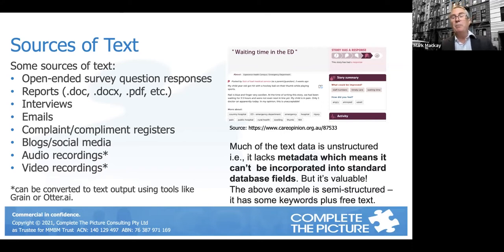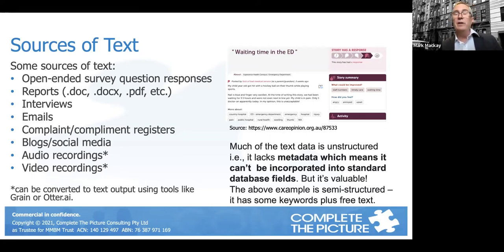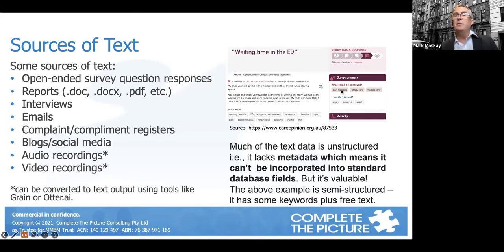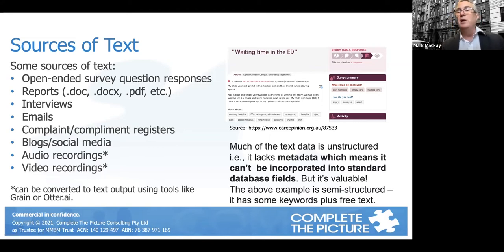We can take the structured pieces and put them into a database. Up here we see Care Opinion, which is a website where people provide feedback to hospitals or aged care. Some governments around Australia are using this to get patient feedback, and it's open for anyone to comment on. The unstructured part is where someone wrote something freely. The structured part consists of specific responses they clicked on — things like staff numbers, timely care, and waiting time. We could count responses across many people relating to waiting time easily, though analyzing the unstructured part is more difficult.